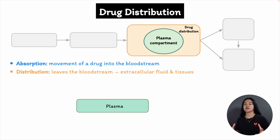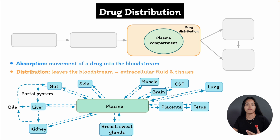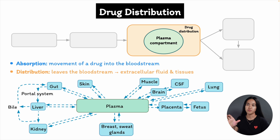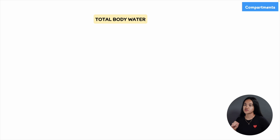It can be distributed throughout the body including blood, adipose tissue, bone, muscles, and any other compartment. There are a number of factors that control this reversible drug transfer from one location to another. But before we get into these factors, let's talk about how body fluids are divided into compartments. This is important because we'll be discussing how drugs can spread beyond the bloodstream into different tissues and compartments.